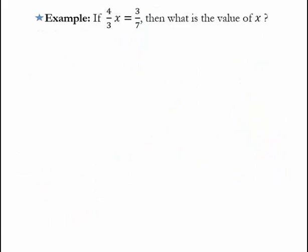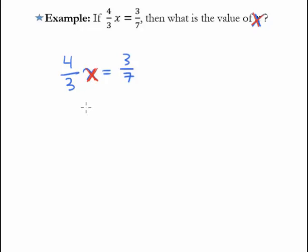Let's take a look at another problem. This one says: if 4 thirds of x equals 3 sevenths, then what is the value of x? So we have 4 thirds times x equals 3 sevenths. Here they're asking us to solve for x — to get x all alone. What's in the way of x is the coefficient 4 thirds. We can get rid of 4 thirds by multiplying by the reciprocal, 3 fourths. When you multiply a number by its reciprocal, you can multiply across to get 12 over 12, which equals 1. Or you see immediately the 3s cancel, the 4s cancel, and everything cancels out.